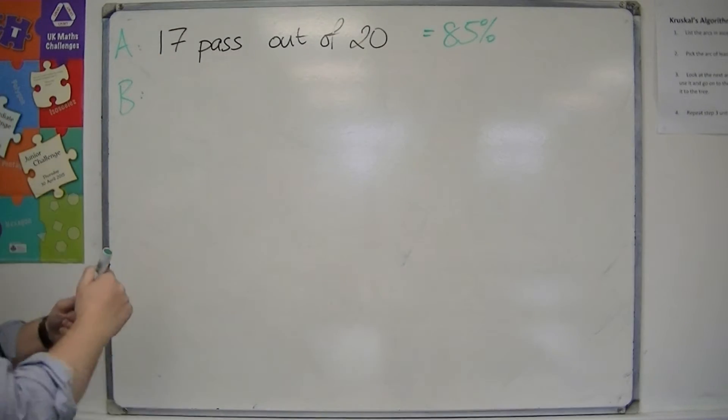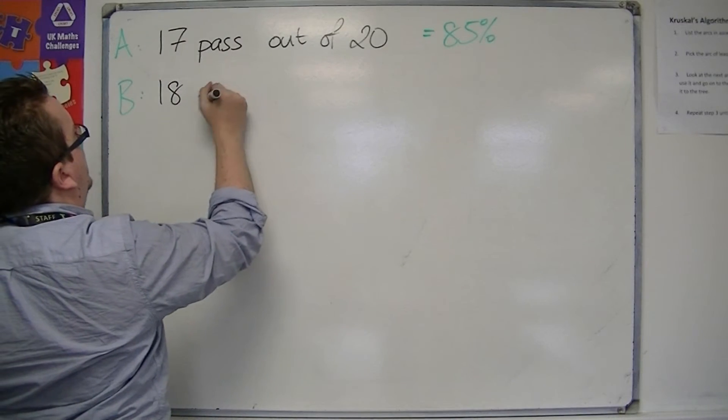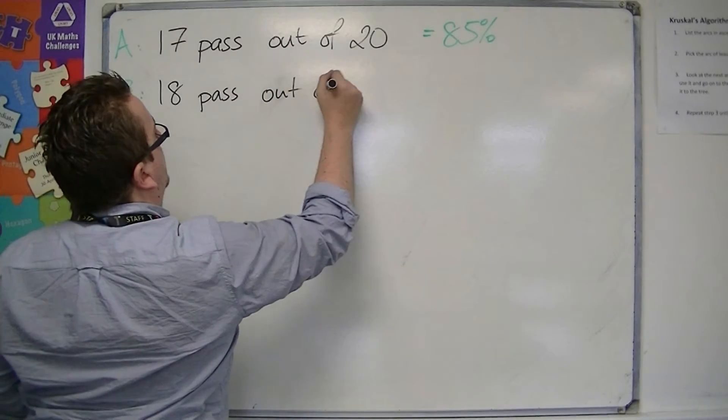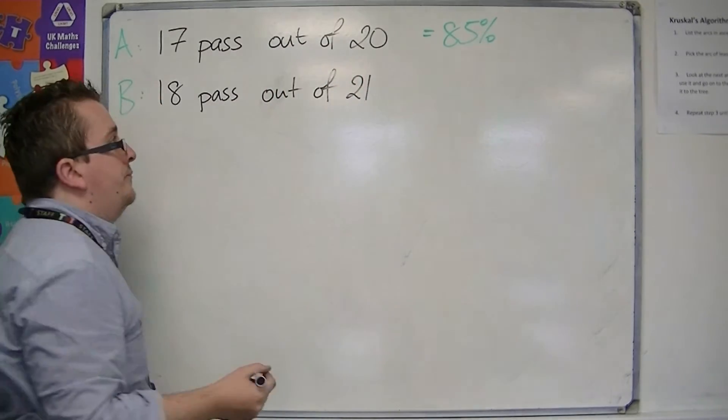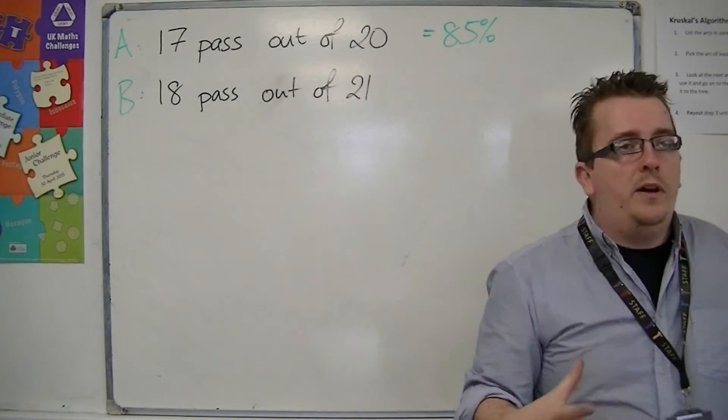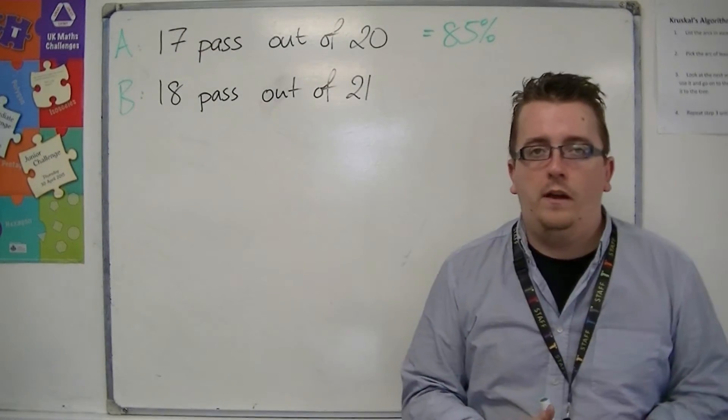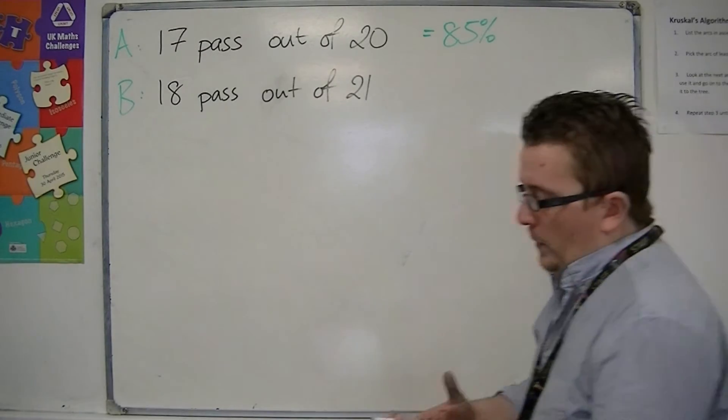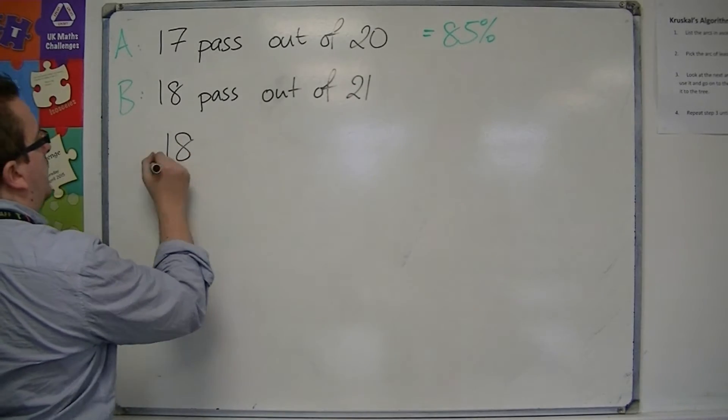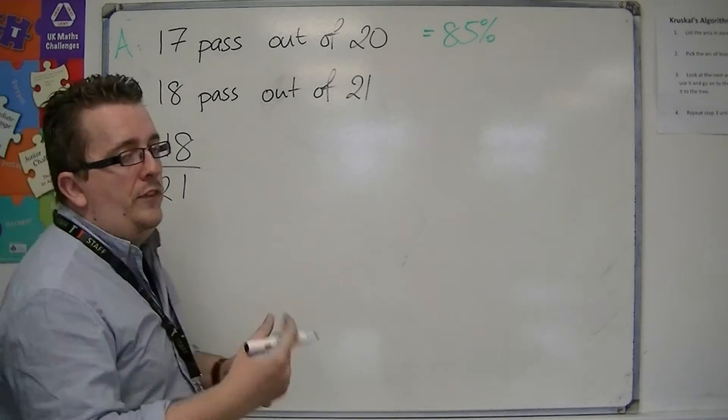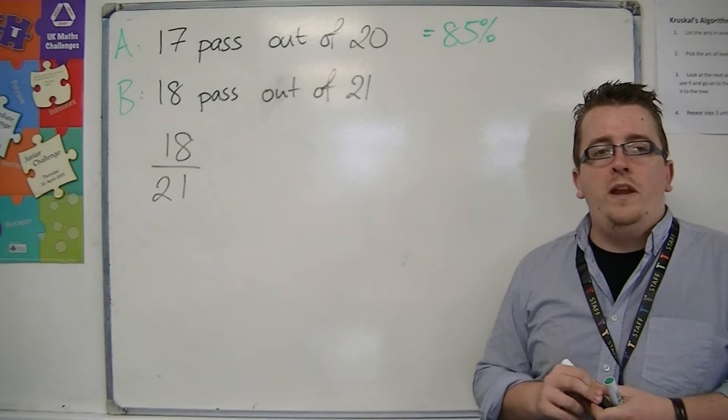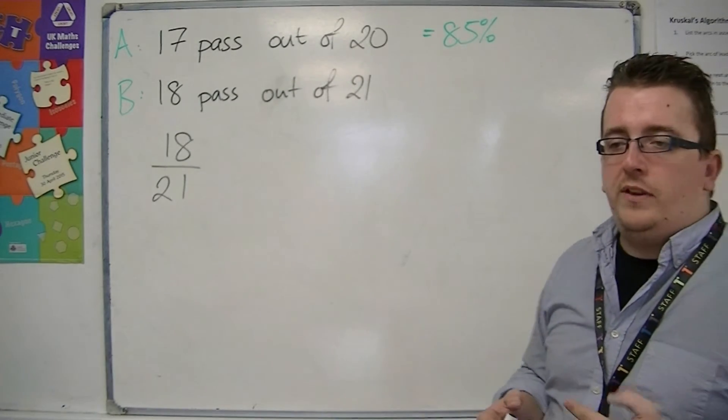Now for class B, let's say that 18 passed out of 21 people in the class. Now we need to work out what 18 over 21 is as a percentage. Now these aren't particularly nice numbers to work with. And so we would preferably use a calculator.